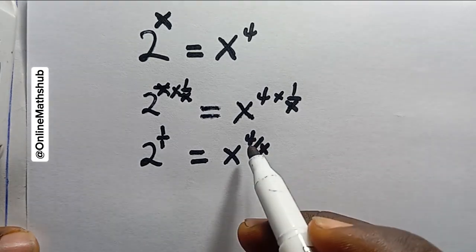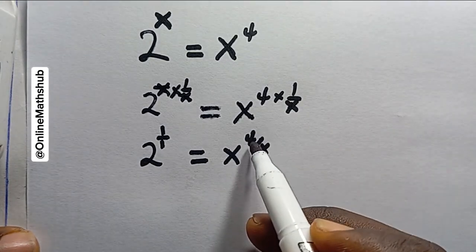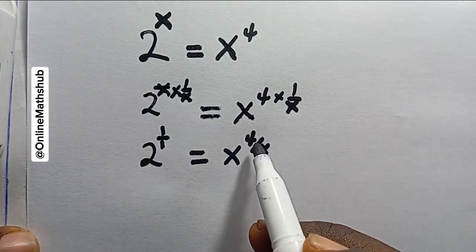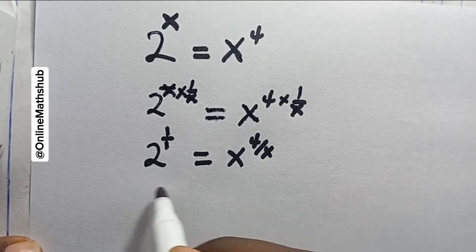Then I'll be able to group the equation. If I did, I'm going to be having 2, let me put this 1 over 1 multiplied by 1 over 4, is equal to x power 4 over x multiplied by 1 over 4.